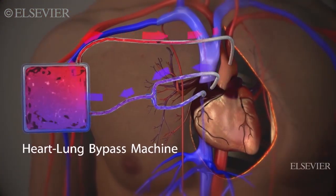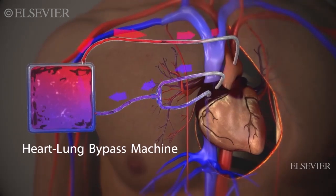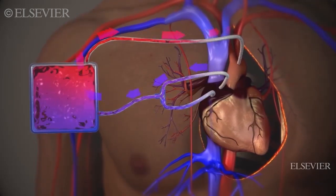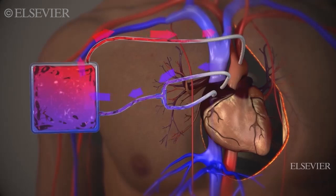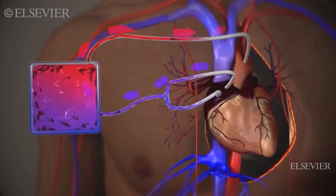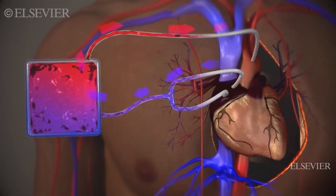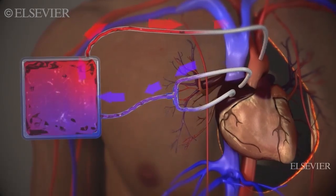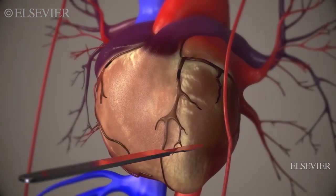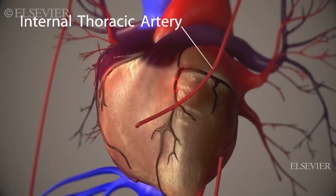Next, the heart is cooled to keep it still using a heart-lung bypass machine, and is connected using plastic tubes. One tube carries blood from the body to the bypass machine, which supplies it with oxygen. The other tube pumps the oxygenated blood back to the body. In essence, the blood bypasses the heart and lungs to get to the rest of the body.